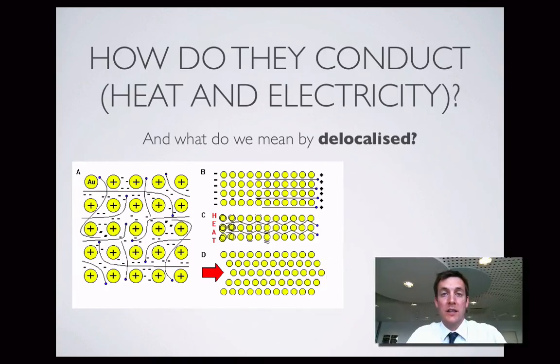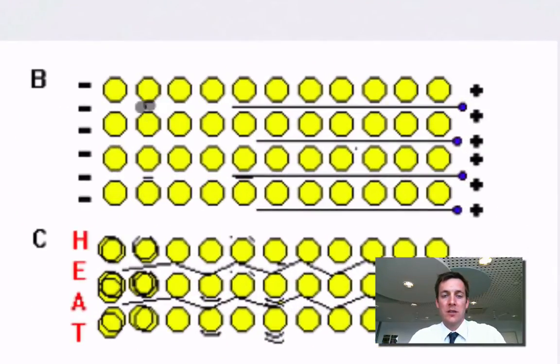Why do they conduct heat and electricity? Well that's also to do with the fact that electrons can move around. This diagram here is showing all the electrons moving in one direction. They've actually shown a negative charge here and a positive charge as if this was in a circuit. So all the electrons moving towards the positive end of the battery because they're negative and they're attracted to positive charges. So the fact that these electrons can move allows metals to conduct.